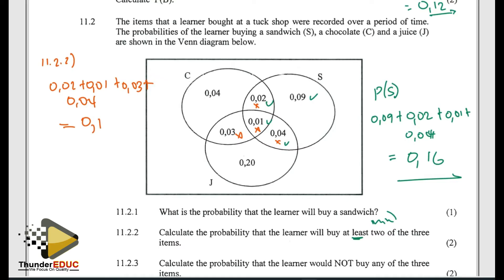Let me just redo that: 0.01 plus 0.03 plus 0.02 plus 0.04. That's four items. Getting 0.01. Perfect — confirmed.